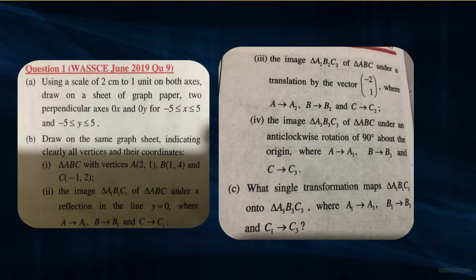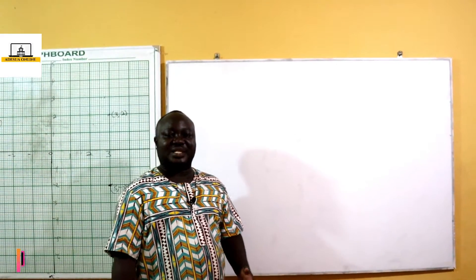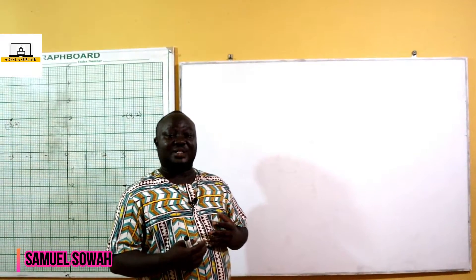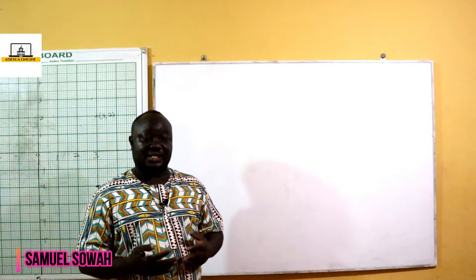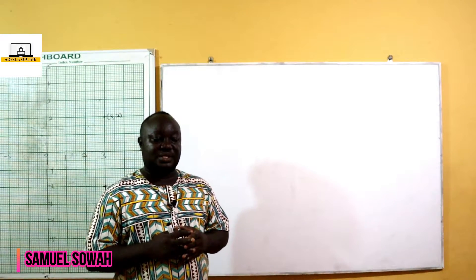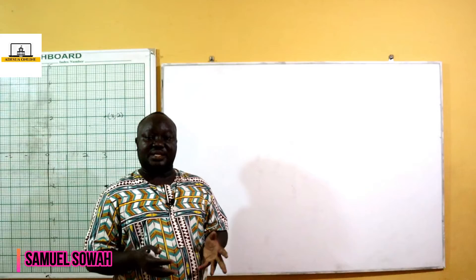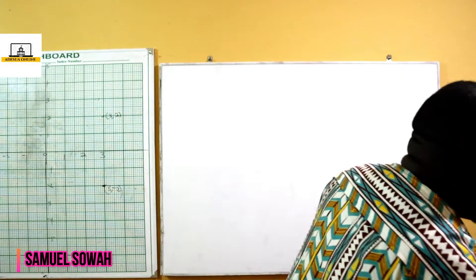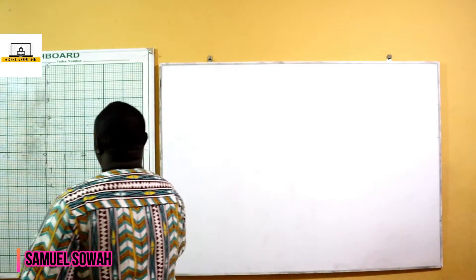Before we start, we are first going to draw our OXY plane. In the question we were already given the vertices of triangle ABC — they weren't given in vector form requiring calculation; the vertices were given directly. So we are going to go straight to the point and locate points A, B, and C. Now, the scale given states that we should have two centimeters to one unit on both axes.